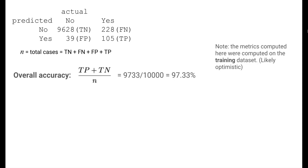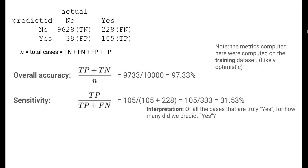Overall accuracy is the total fraction of correct predictions — true positives plus true negatives over the total number of cases. Our logistic regression model for loan defaults has a high overall accuracy of 97.33%. However, this accuracy has been computed on the training data, so we may be prone to overfitting. Sensitivity is a class-specific accuracy measure giving the percentage of true yeses predicted to be yes — in this case, the percentage of actual defaulters we predict to default. There are 333 people who defaulted, but we only detected 105 of them, or 31.53%.